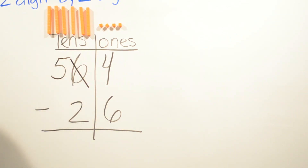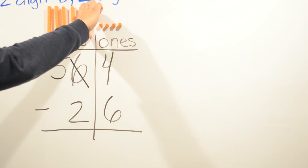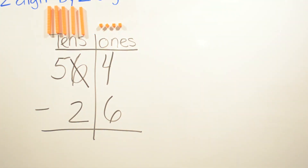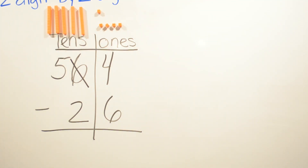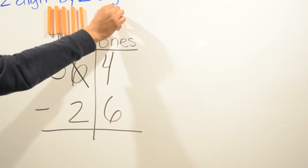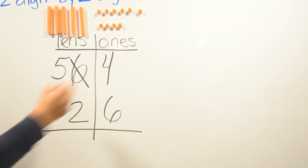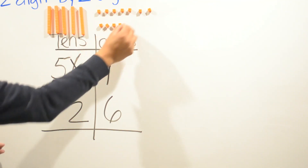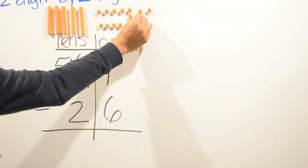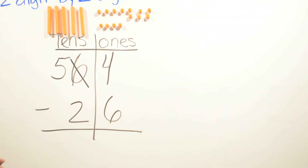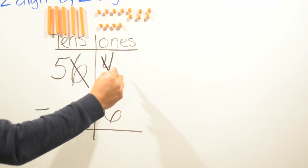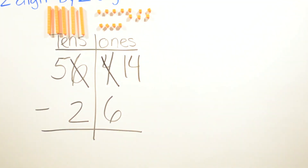That six is gonna become a five, but we're gonna take that ten because we borrow one to give it to the ones place: one, two, three, four, five, six, seven, eight, nine, and ten. Now, instead of four we have fourteen.